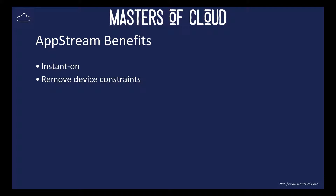We can remove device constraints on end-user platforms. We can leverage the compute power of the AWS infrastructure to deliver experiences that wouldn't normally be possible locally on the user's computers, and that could be for things like graphics processing units or GPUs. Users may need a very specific, expensive GPU that isn't compatible with their endpoint — we could spin up AWS AppStream instances that have GPUs in them to deliver those applications.